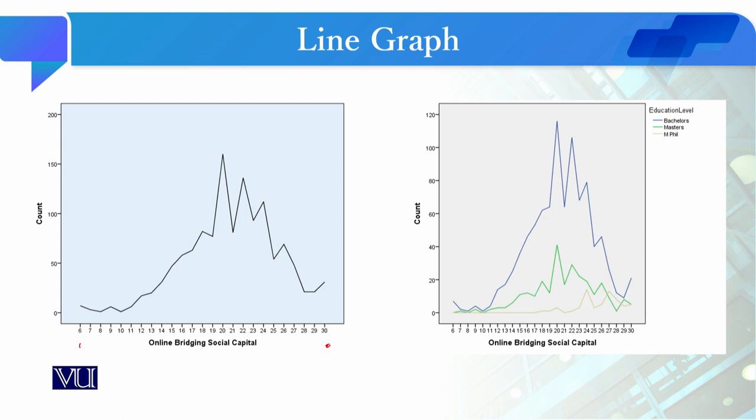On the other side, this line graph is a bivariate line graph with multiple lines. Why? Because we have added a second variable, education level: Bachelors, Masters, and MPhil.